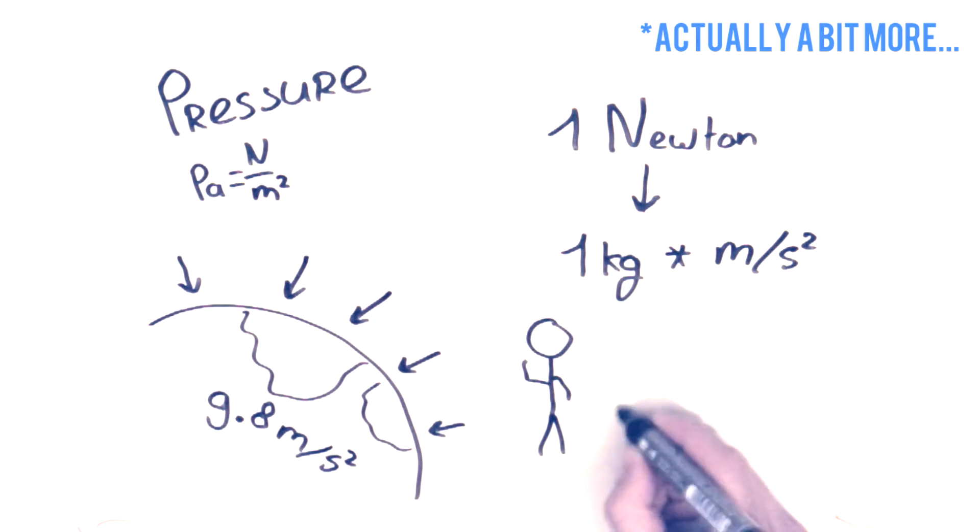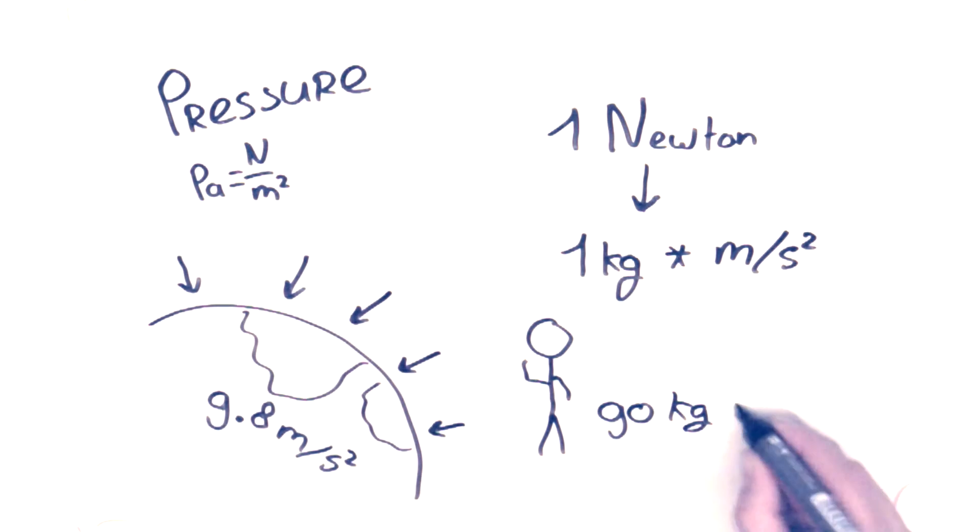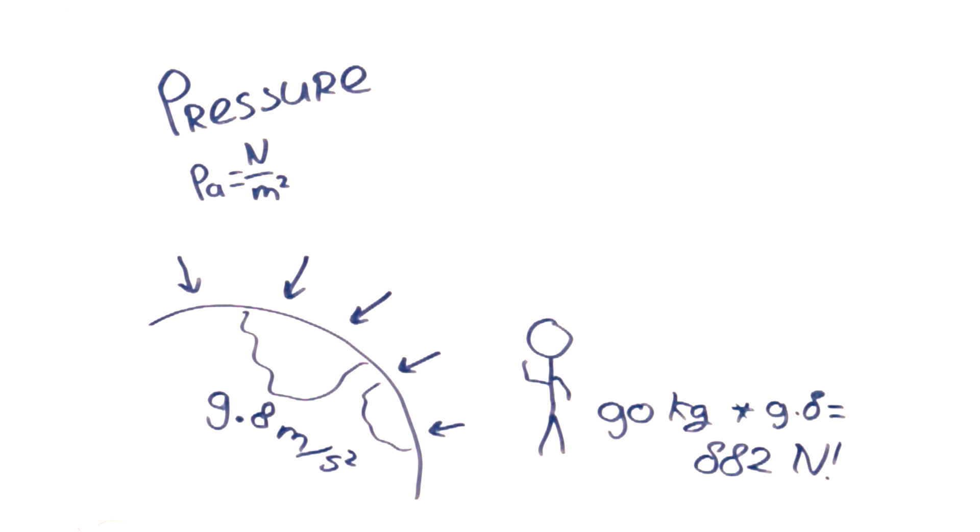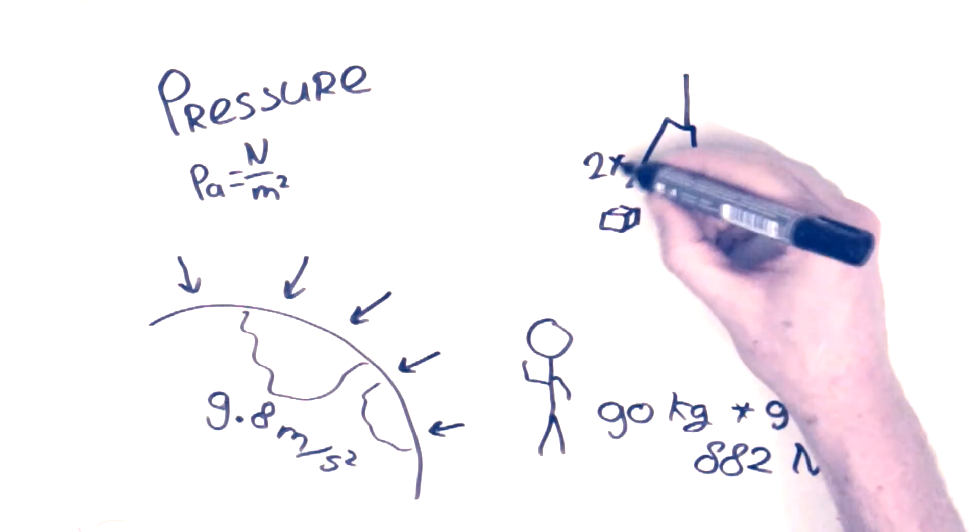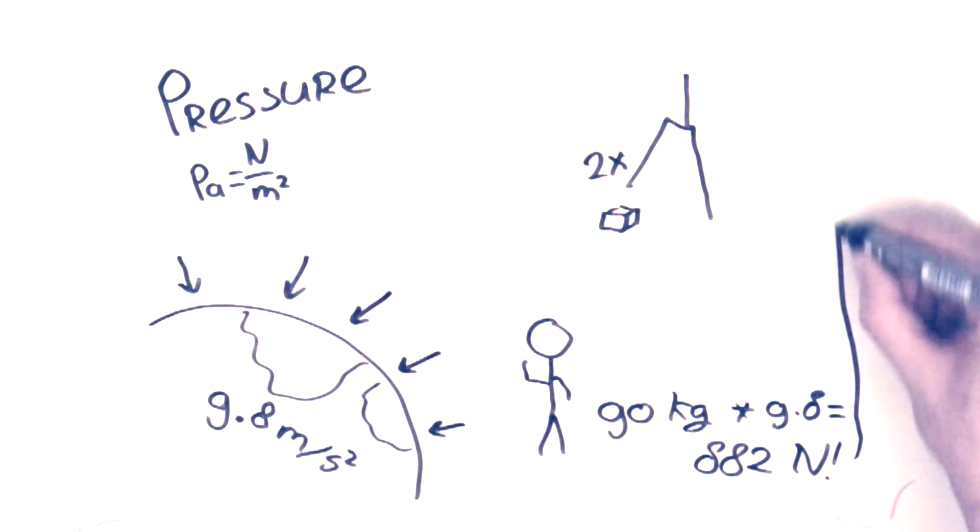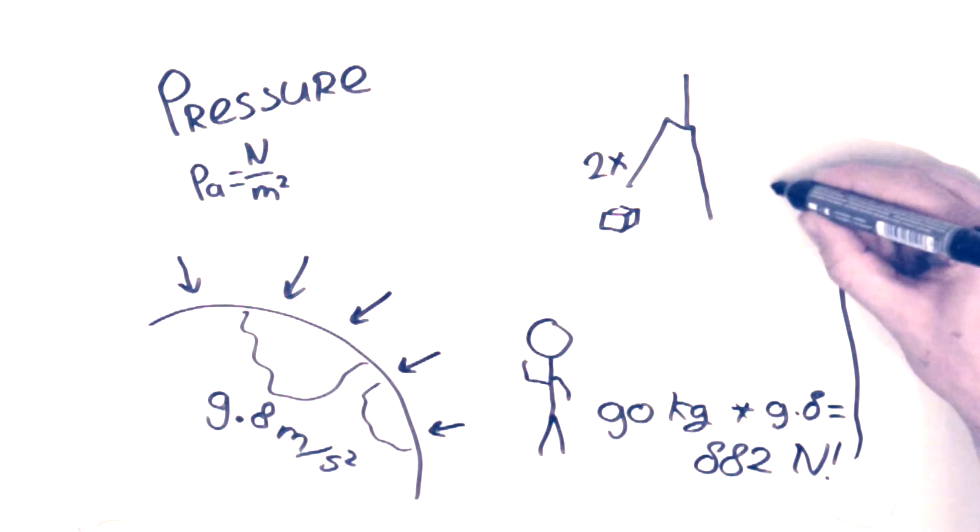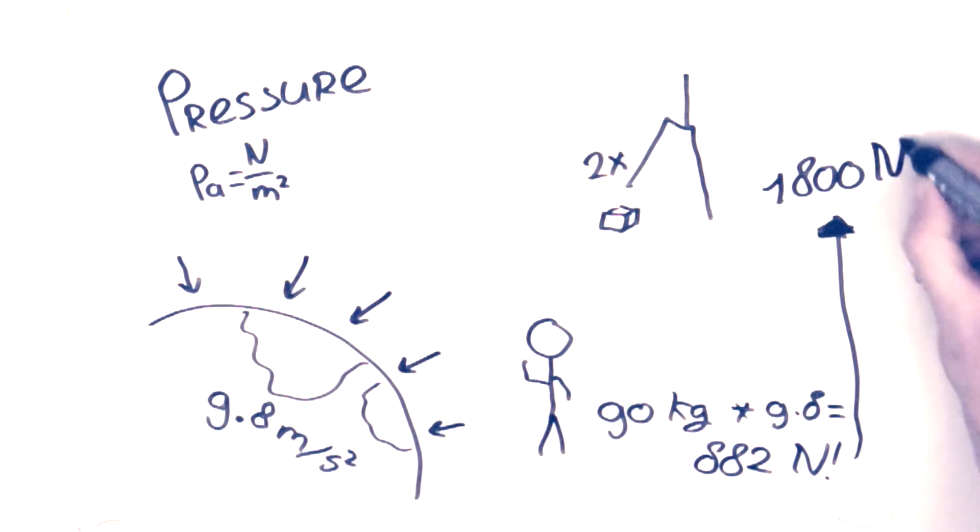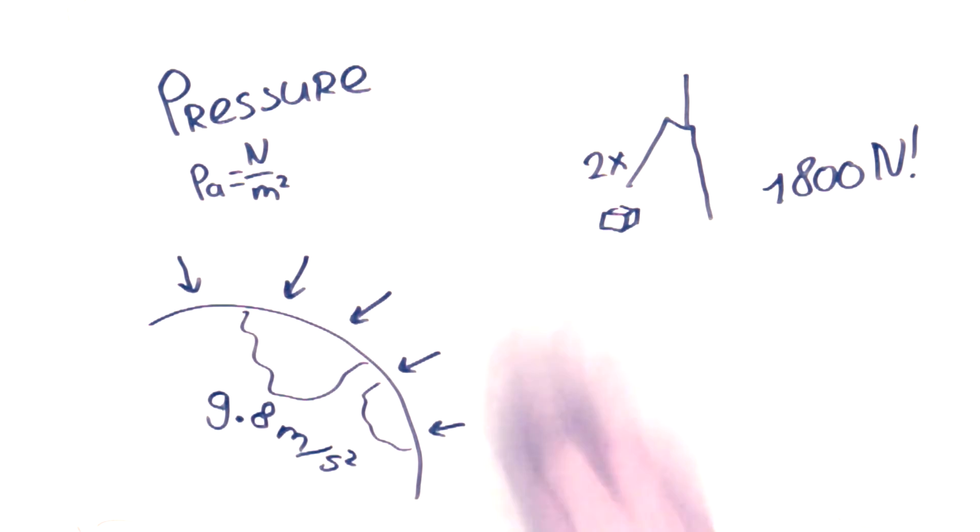I weigh about 90 kilos, so when I'm standing still, the force I'm exerting on the ground is 90 times 9.8 is 882 newton. But when I step on a Lego, I'm not standing still. I'm moving my feet actively towards the ground. And walking can easily double the acceleration, even up to 10 times if you're running. Let's say we double the acceleration, and this will make my force 1800 newton.